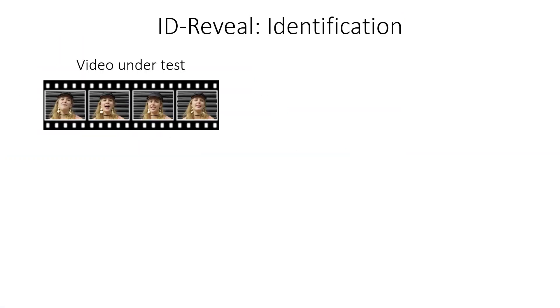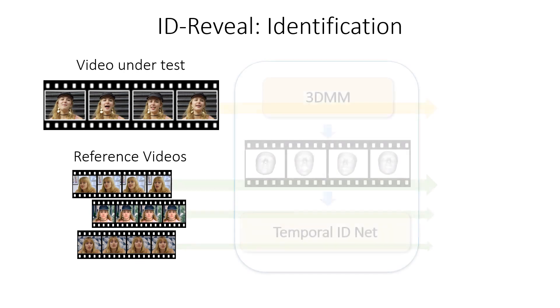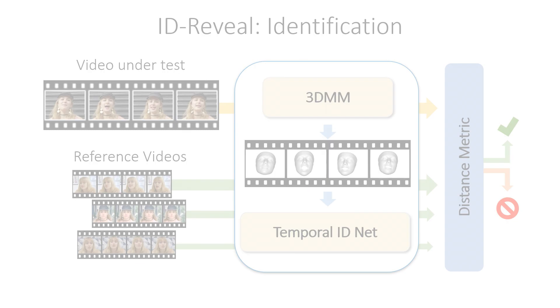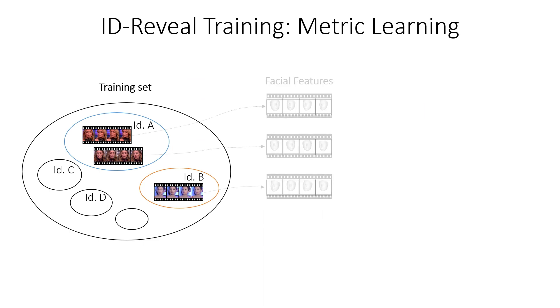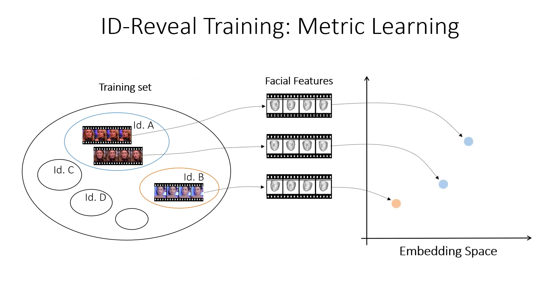We propose a method that does not directly detect whether a video is real or fake, but instead we ask the question whether this is actually the person who is claimed to be. We only need a set of pristine videos of the claimed identity. We compare the resulting feature embeddings in a learned feature space. This embedding space is trained only on pristine videos of many individuals, but it is not dependent on a specific manipulation method.